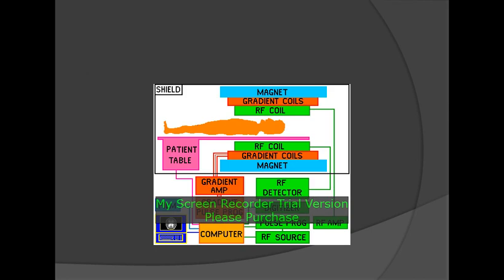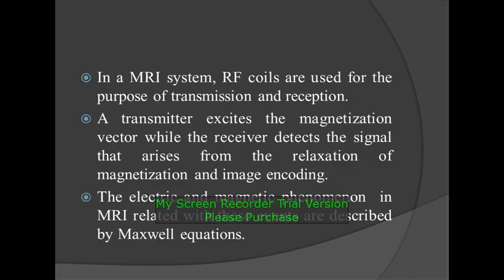The MRI system consists of: RF coil, gradient coil, shim coil, and magnet. In MR imaging, RF coils are used for the purpose of transmission and reception of the signal. A transmitter excites the magnetization vector while the receiver detects the signal that arises from the relaxation of the magnetization and image encoding. The electrical and magnetic phenomena in MRI related to these events are described by Maxwell's equations.